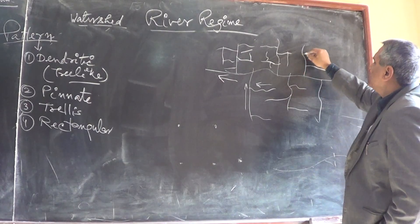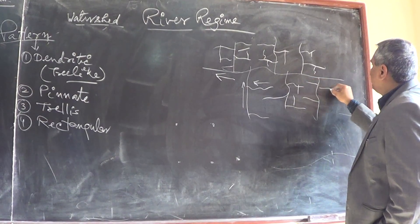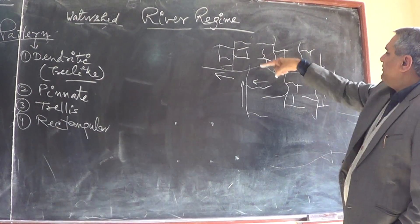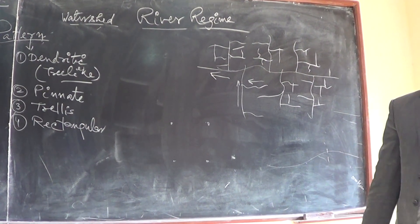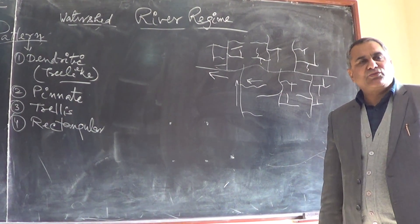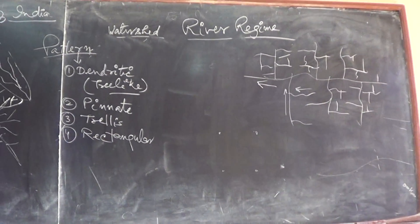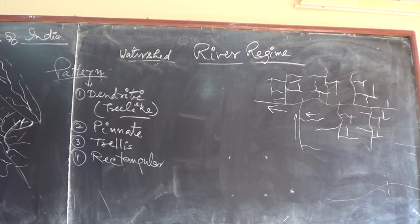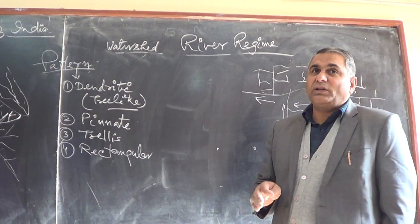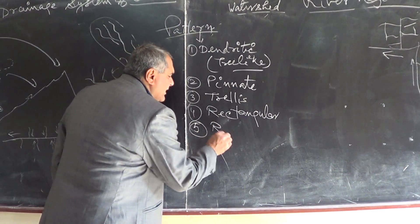The rectangular pattern depends on the fractures and the nature of the folds in the rock surface. Where the rock is highly fractured, this rectangular pattern keeps repeating. The fifth type of drainage is called the radial drainage pattern.